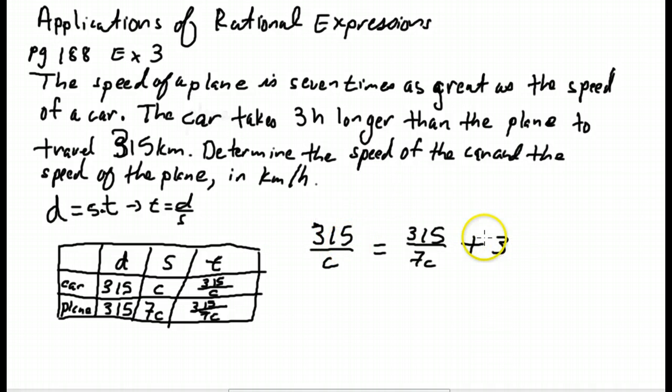How do we solve this? First off we say C can't be zero. C is the speed of the car, that can't be zero. Our lowest common denominator is 7C. I'm going to multiply through by 7C. The 315 has the C already. This 315 here has the 7C. And this 3 is going to be multiplied by 7C.